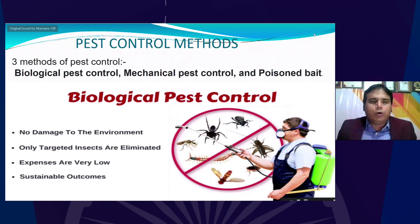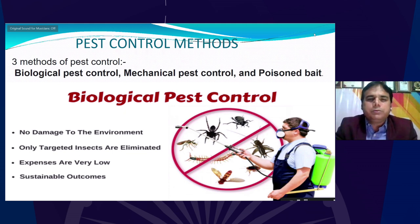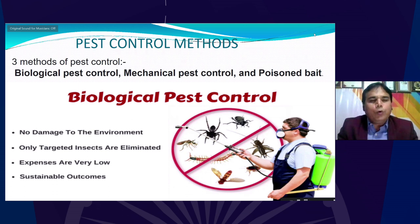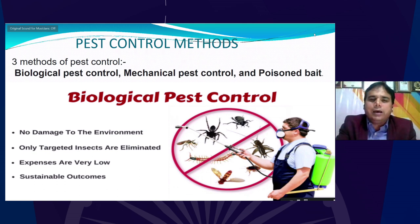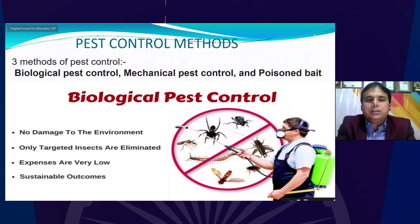Worms can eat the leaves of growing plants. There are three methods of pest control: biological pest control, mechanical pest control, and poisonous bait. Biological pest control is the most useful, most significant, and most eco-friendly method because there is no damage to the environment — only targeted insects are eliminated, expenses are very low, and it results in sustainable outcomes. For example, neem leaves or using another organism to eliminate a pest can be used as biological control.